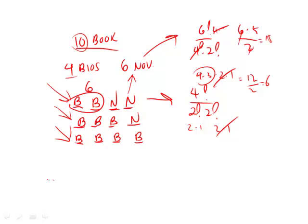That means there's 15 different ways to arrange these novels or to choose these novels. When you want to find total possibilities, you multiply 6 times 15 equals 90.